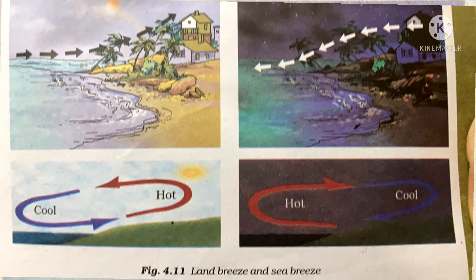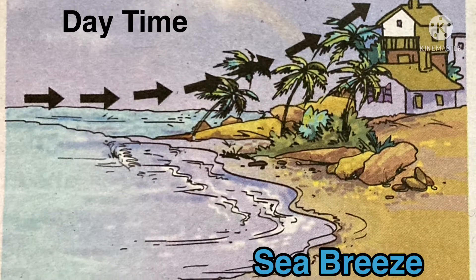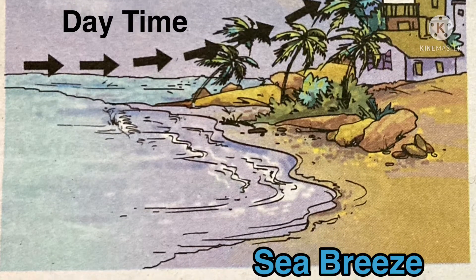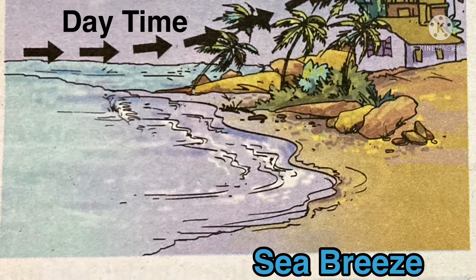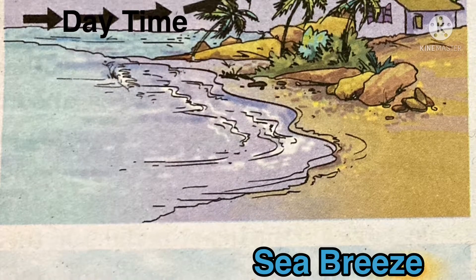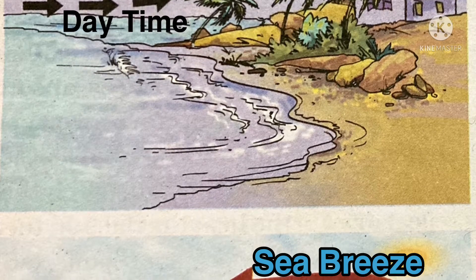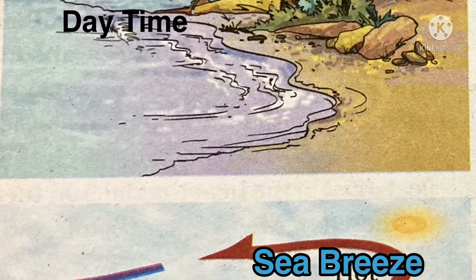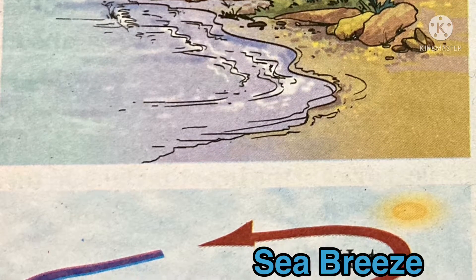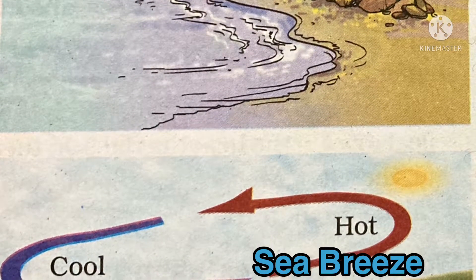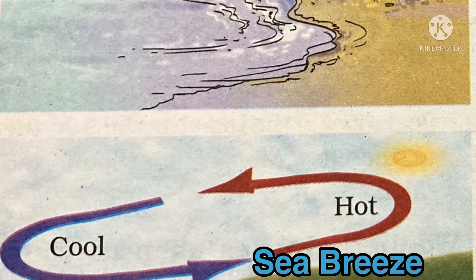The people living in the coastal areas experience an interesting phenomenon. During the day, the land gets heated faster than the water. The air over the land becomes hotter and rises up. The cooler air from the sea rushes in towards the land to take its place. The warm air from the land moves towards the sea to complete the cycle.